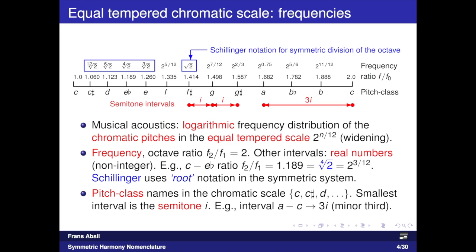The starting point for the notation in the symmetric system of harmony is the equatemperate chromatic scale shown on the linear frequency axis. In equatemperate tuning we use the chromatic scale with 12 pitch class units within the octave. Two neighboring pitches in this scale are separated by the semitone interval, here the symbol I. On the piano keyboard or a musical staff, neighboring chromatic pitches seem equidistant — however, that is not the case when we consider musical acoustics and look at the frequencies.